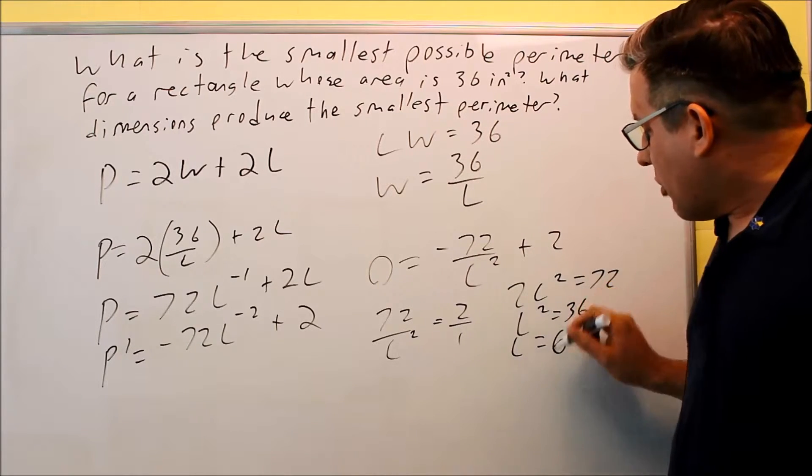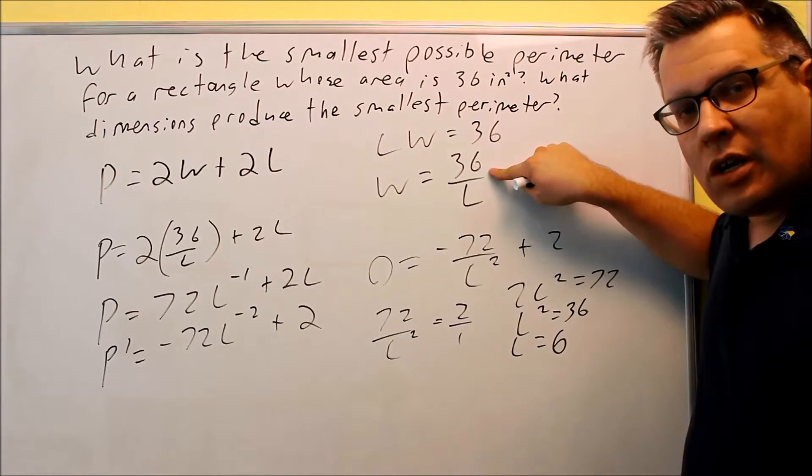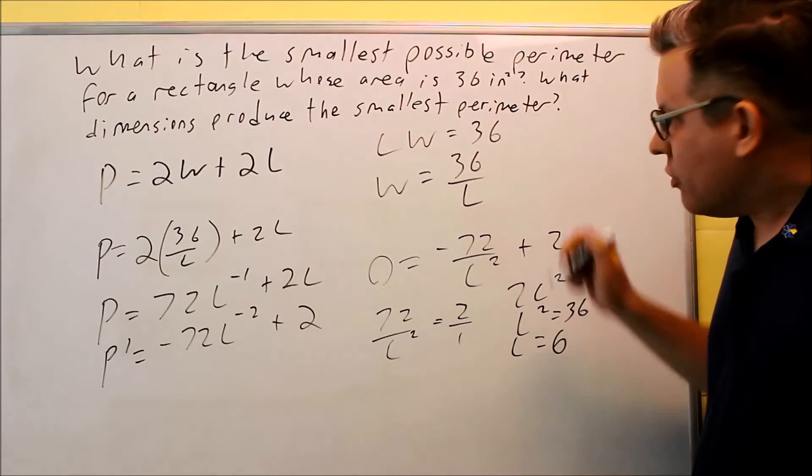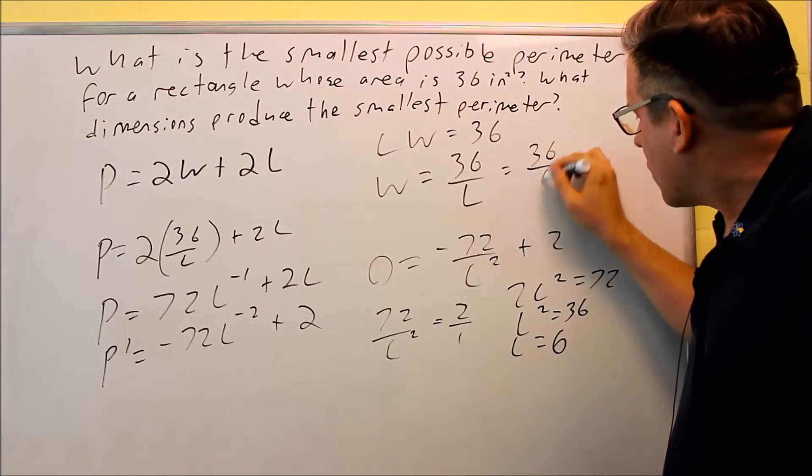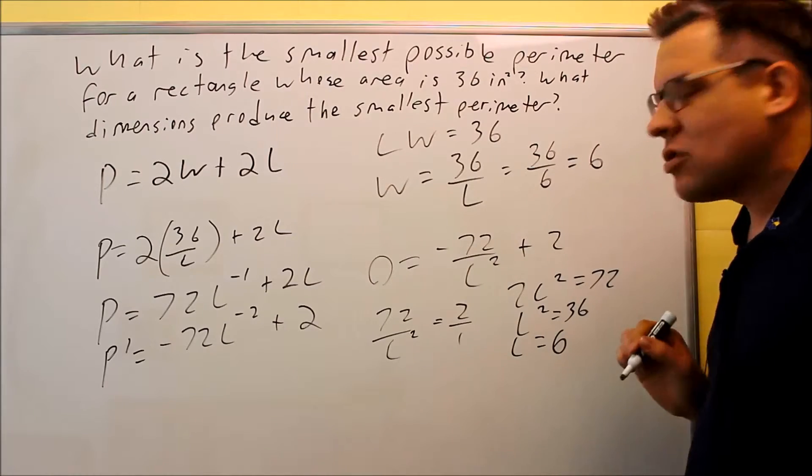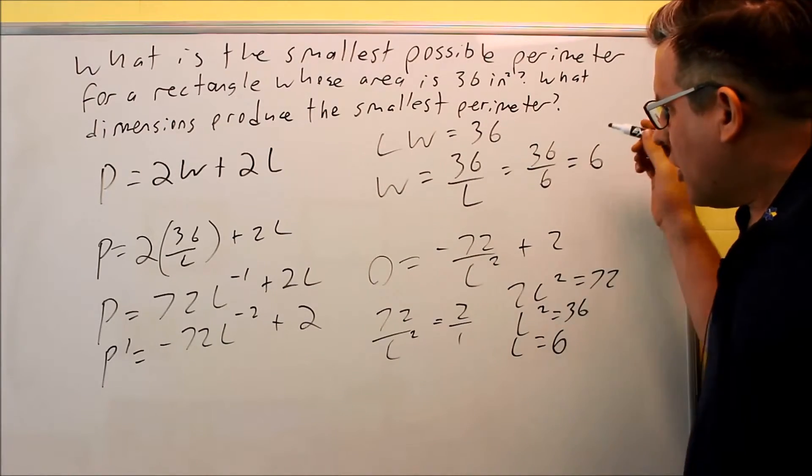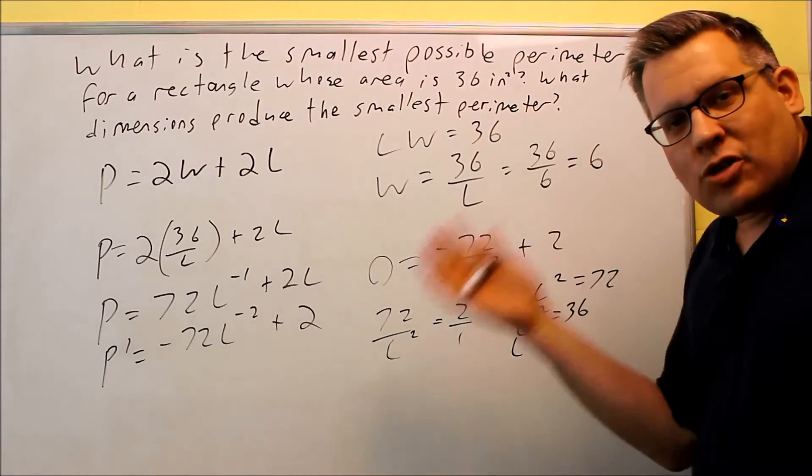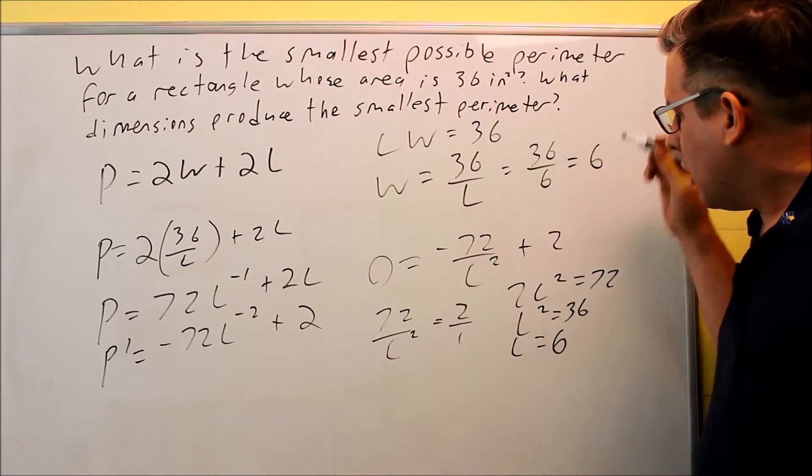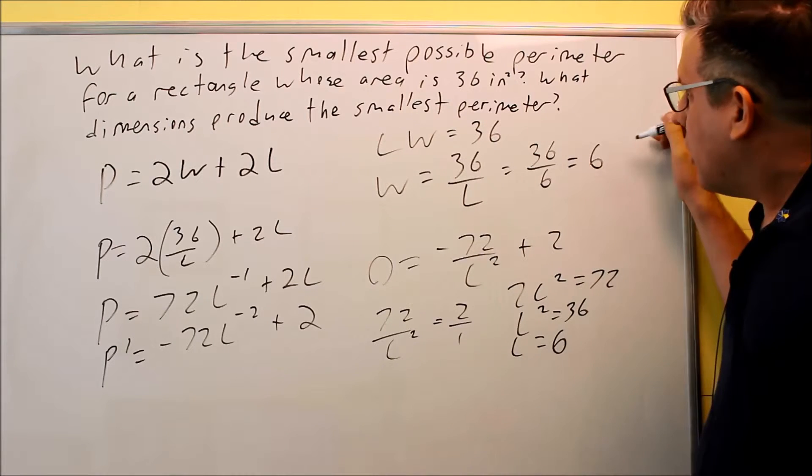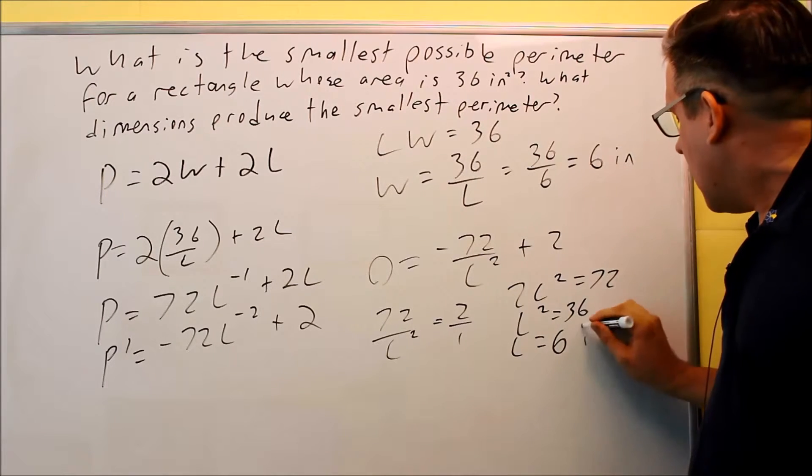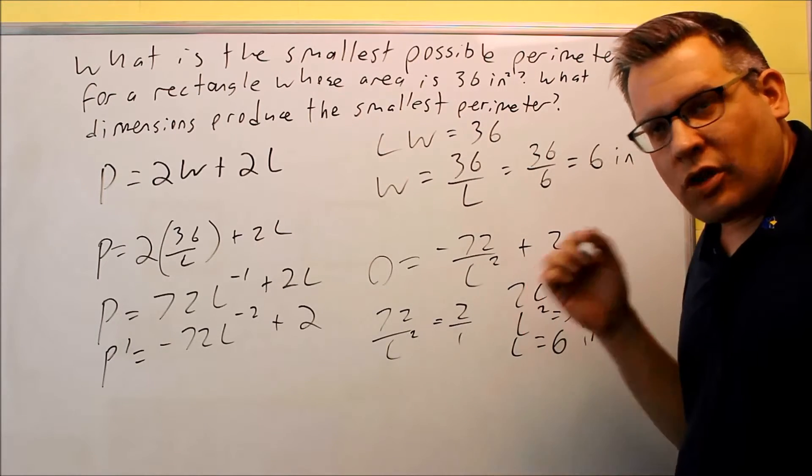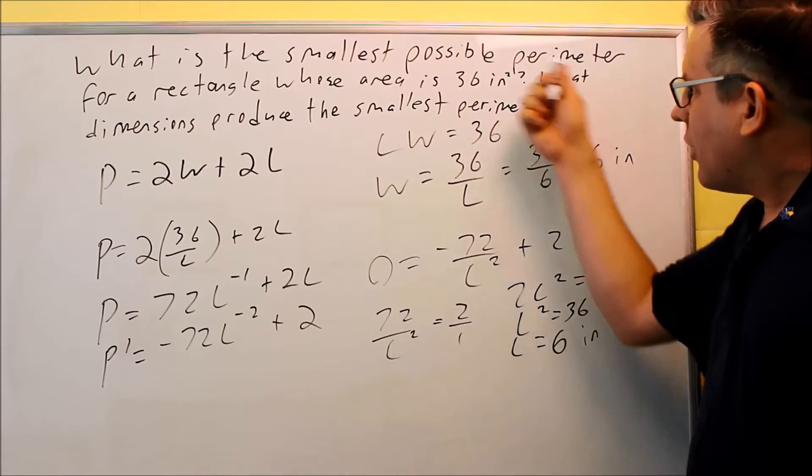So what I'm going to do is go back into this equation right here, and now I can figure out what W is. If I put that in there, 36/6 equals 6 also. So that means that's my first answer. It says what dimensions produce the smallest perimeter? The dimensions that produce the smallest perimeter will be width of 6 inches and your length is going to be 6 inches also. That's the first part of the question.